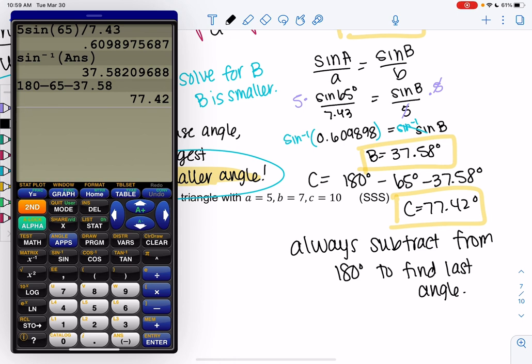So just always subtract from 180 to find the last one. And so ended up this one is also acute because it's less than 90 degrees. So it wouldn't have been an issue in this problem, but we wouldn't have known. So solve for the smaller angle if you continue with law of sines. If you don't want to worry about that, just use law of cosines. I'll see you back for example two.